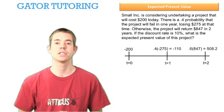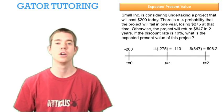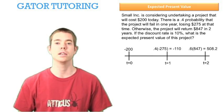In time period two, we have a 60% chance of receiving positive $847, so our expected value in time period two is positive $508.20.